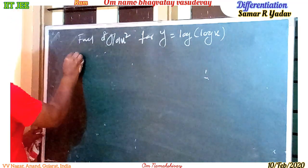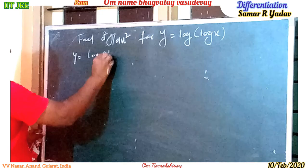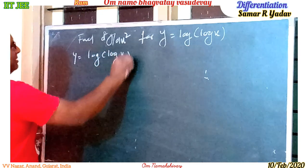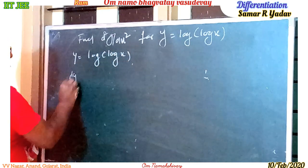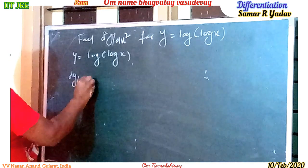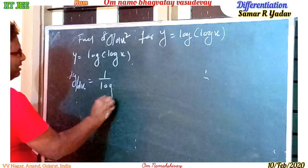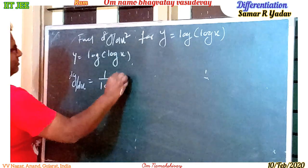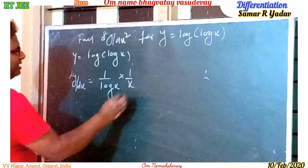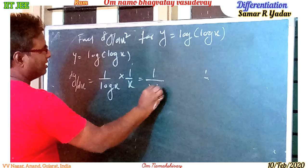Suppose y is equal to log of log x. If I find dy/dx with respect to x: the derivative of log x is 1 upon log x, and the derivative of log x is 1 upon x. So we can write dy/dx = 1 upon x log x.